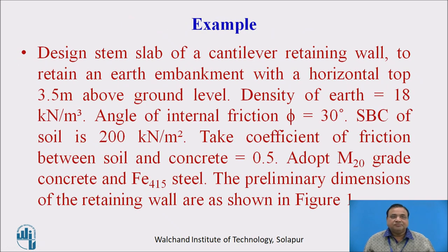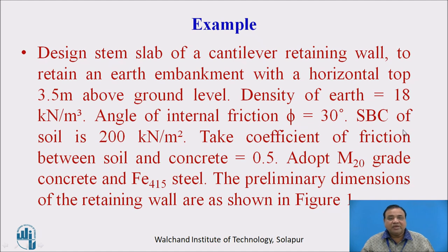Design Example: Design the stem slab of a cantilever retaining wall to retain an earth embankment with a horizontal top 3.5 meters above the ground level. Density of earth is 18 kN per cubic meter, angle of internal friction is 30 degrees, safe bearing capacity of the soil is 200 kN per meter square, coefficient of friction between soil and concrete is 0.5. Adopt M20 concrete and Fe415 steel.